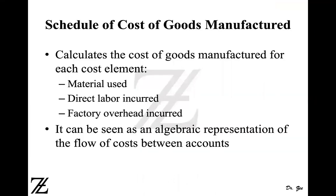So how do you prepare a schedule of cost of goods manufactured? First, you need to calculate the amount of direct material used, the amount of direct labor incurred, and the amount of factory overhead that you have applied. Once you have those three things, you can create the schedule of cost of goods manufactured. You can prepare it in a statement form, or you can use the algebraic equations. In this video, we'll do both.